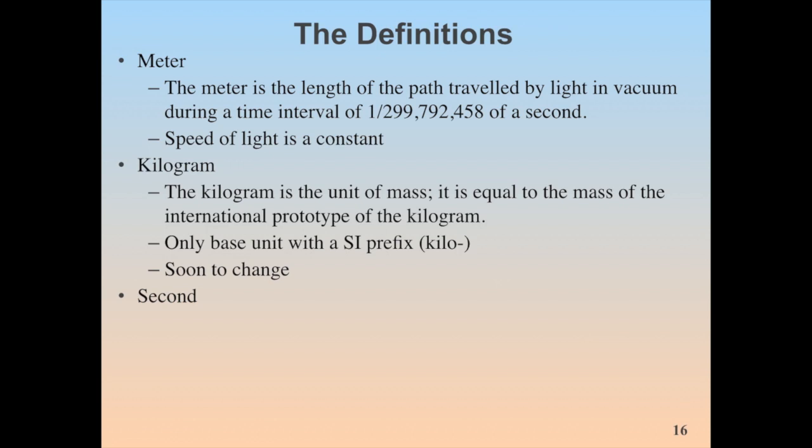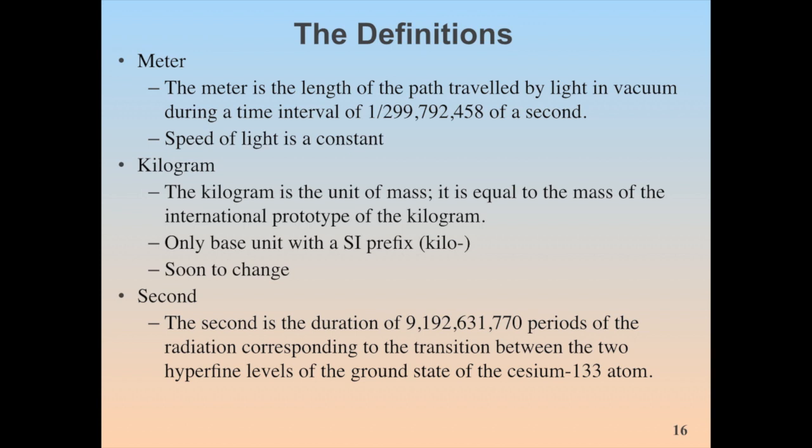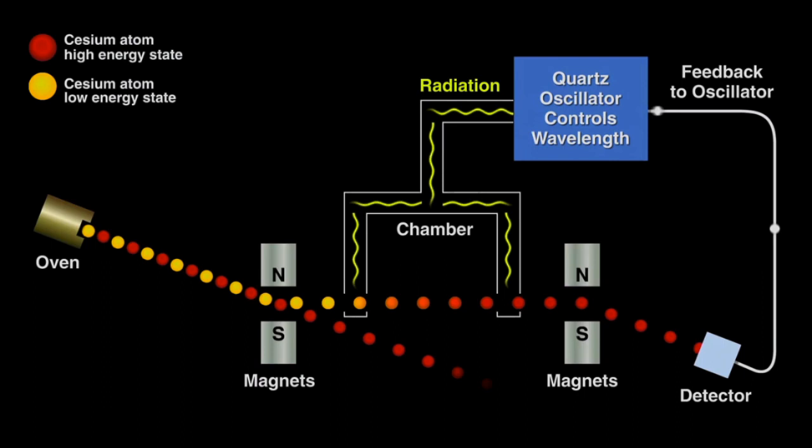Next up is the second and this is defined as the duration of 9,192,631,770 periods of the radiation corresponding to the transition between two hyperfine levels of the ground state of the cesium-133 atom. So here we have a little schematic diagram on how a cesium atomic clock actually works.